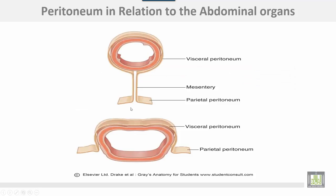Organs which are covered completely with visceral peritoneum are mobile organs, suspended by a fold of peritoneum. Those covered in front and on the sides only include the ascending and descending colons.